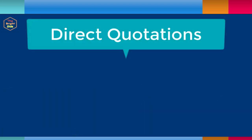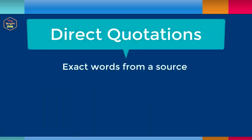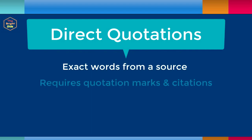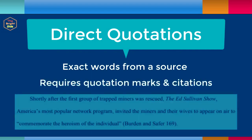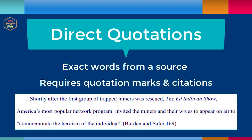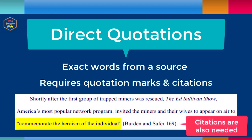Direct quotations involve incorporating another person's exact words into your own writing. Using a source's exact words requires a pair of quotation marks around the direct quote to signal that these words are not your own.